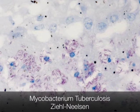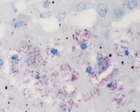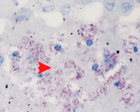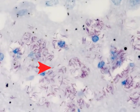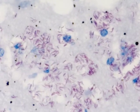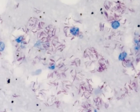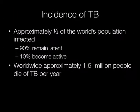The red rod-shaped organisms are tuberculosis bacilli. The organisms have a thick waxy coat and the stain used to demonstrate them is the Ziehl-Neelsen or ZN. Approximately one third of the world's population is infected by TB. 90% of these will remain latent but approximately 10% become active.